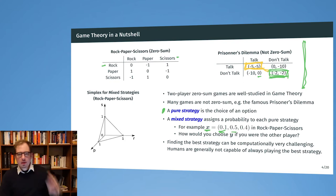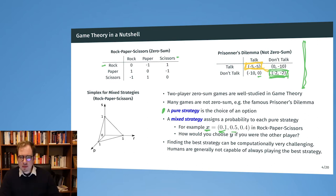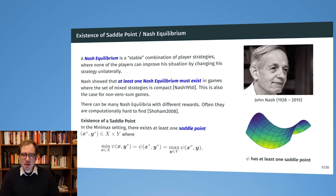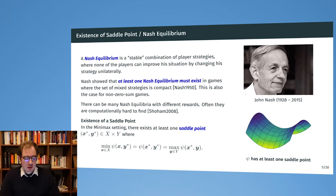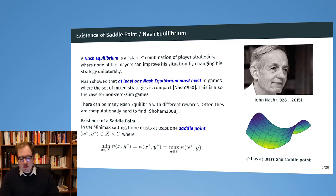Finding these strategies in general can be computationally challenging — there are books on algorithmic game theory on how to find these equilibria. There can also be situations with more than one equilibrium. A Nash equilibrium is a stable combination of player strategies where none of the players can improve his situation by changing his strategy unilaterally. Nash showed that in certain categories of games, including non-zero-sum games, at least one Nash equilibrium must exist — specifically, in all games where the set of mixed strategies is compact.